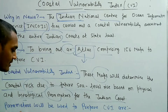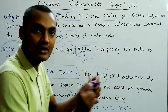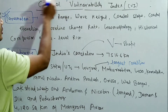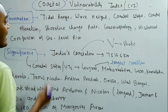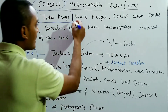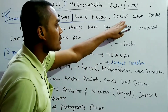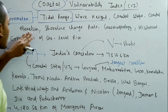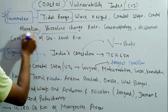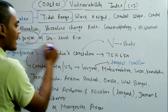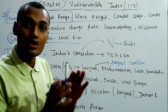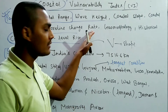The parameters used to prepare the Coastal Vulnerability Index are: tidal range, wave height, coastal slope, coastal elevation, shoreline change rate, geomorphology, and historical comparison of sea level rise.